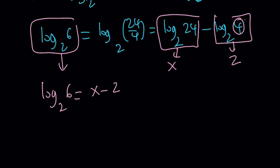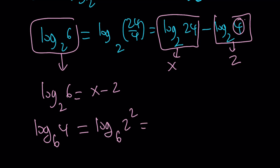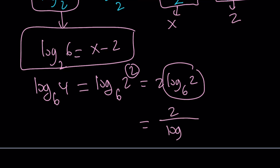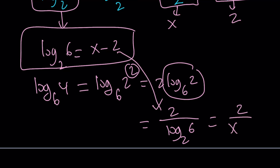We're supposed to evaluate log 4 with base 6. We can write 4 as 2 squared, bring the 2 down: 2 times log 2 with base 6. This expression is the reciprocal of log 6 with base 2, so we can write it as 2 over log 6 with base 2. Since log 6 with base 2 equals x minus 2, the answer is 2 over x minus 2 — the same as before.